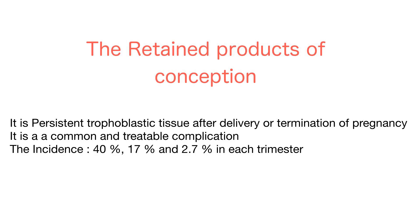Coming to what is RPOC — as the name suggests, retained products of conception. It is persistent trophoblastic tissue after delivery or termination of pregnancy. It is a common and treatable complication. The incidence is 40%, 17%, and 2.7% in each trimester.